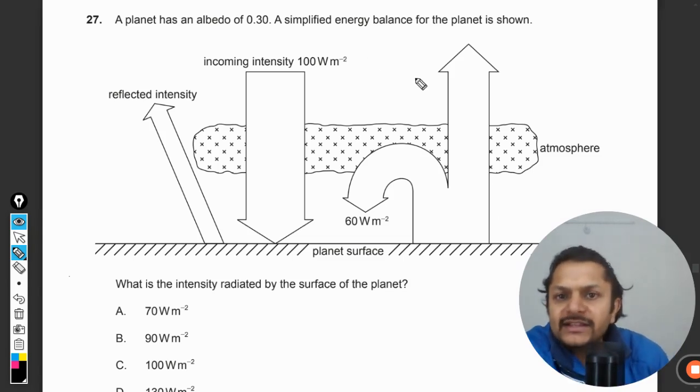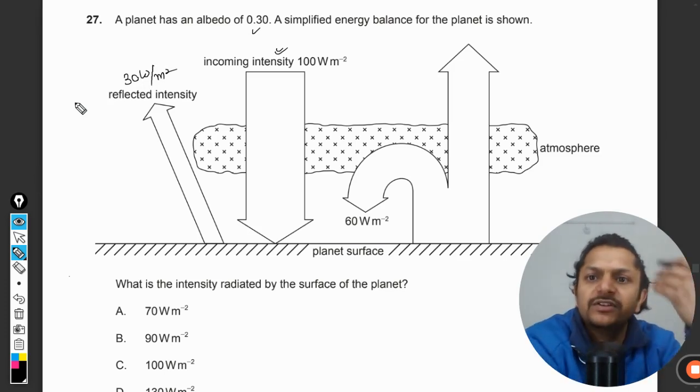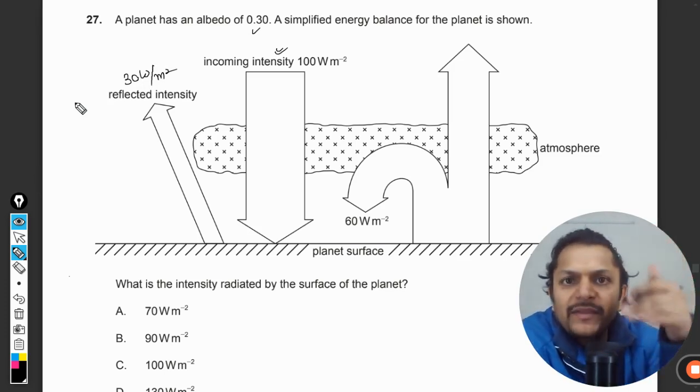Let us read this. The incoming intensity is taken to be 100 W/m². 0.3 is the albedo, which means that 30 W/m² is the energy which is reflected back by the clouds and the surface of the planet.